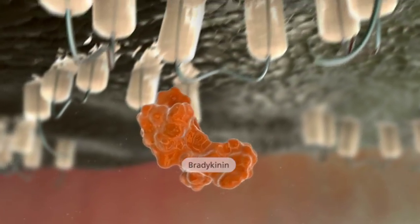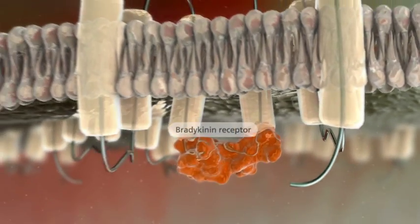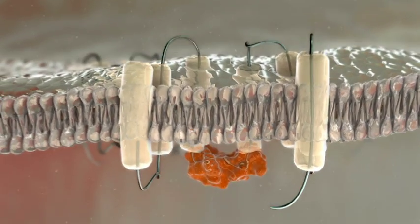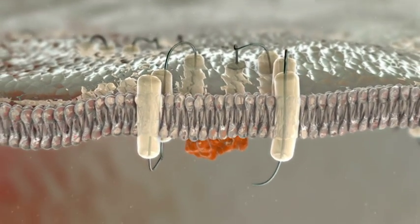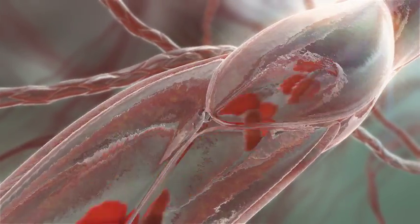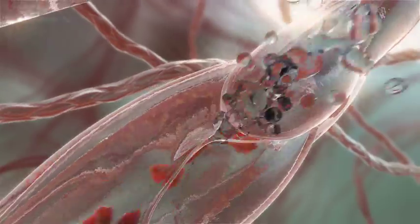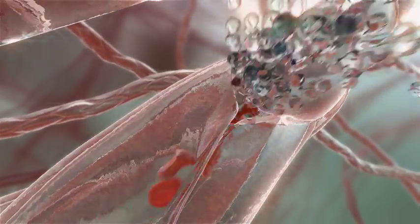Bradykinin binds to bradykinin receptors found on endothelial cells lining the inner layer of the vascular space. The endothelial cells lose their attachment to each other and retract. This allows fluids and proteins to diffuse out into the local tissues causing tissue swelling.